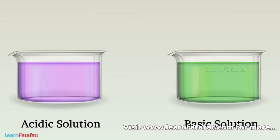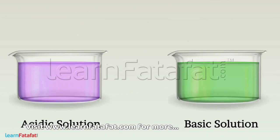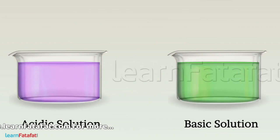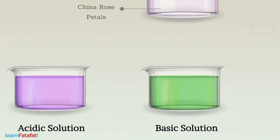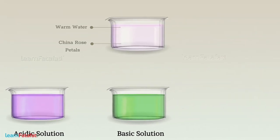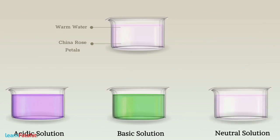This means that china rose water turns dark pink in acidic solution and green in basic solution. If there is no change, then the solution is neutral. Thus, we can use it for finding the nature of solution.